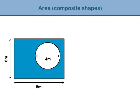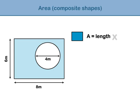In this example, the blue shaded area is a rectangle, and the white circle is a hole that has been cut out of the middle. To find the area of the composite shape, we begin by finding the area of the rectangle. The formula for calculating the area of a rectangle is: area equals length times breadth. Substituting in the values, the area is 8 times 6, which equals 48 metres squared.